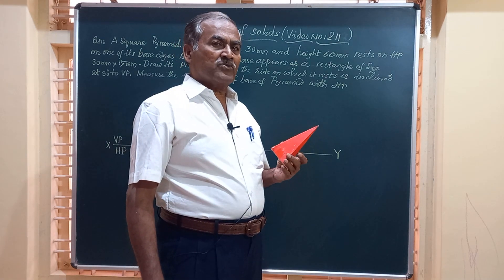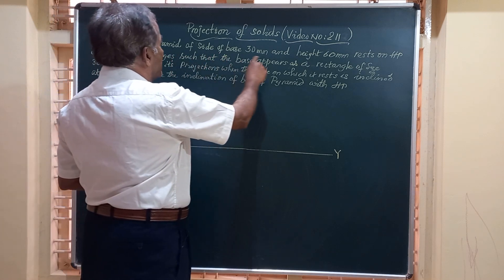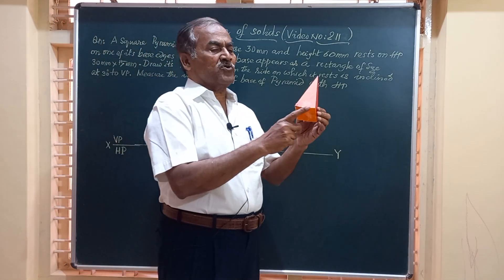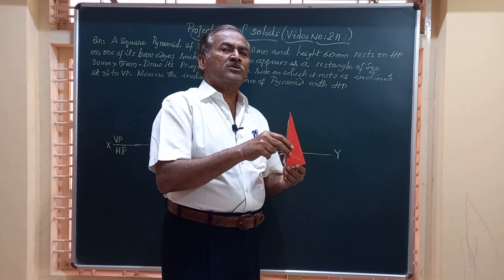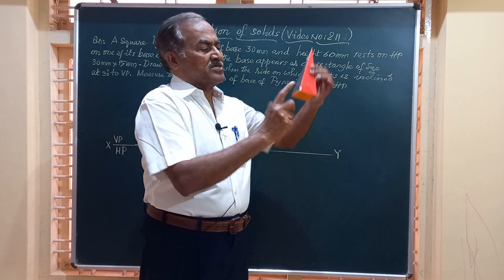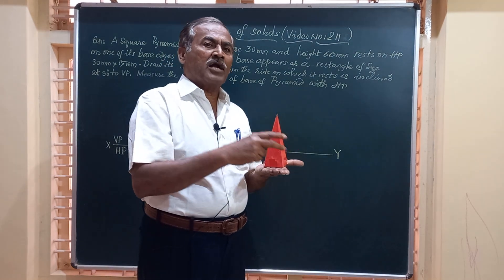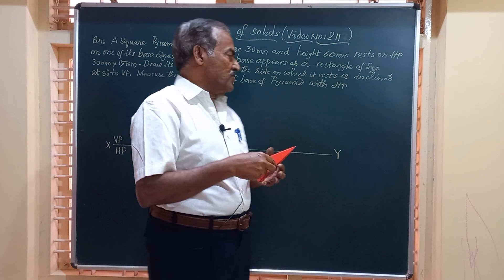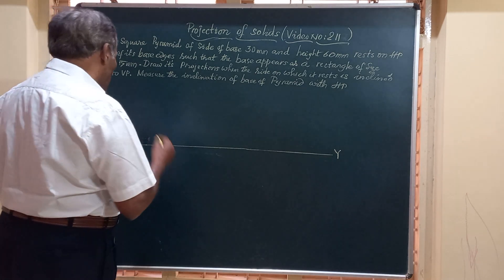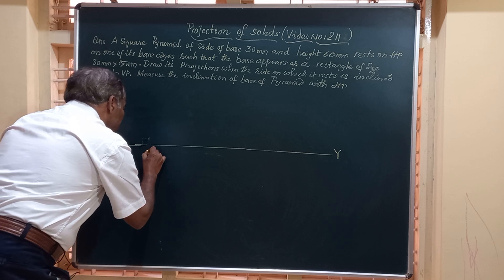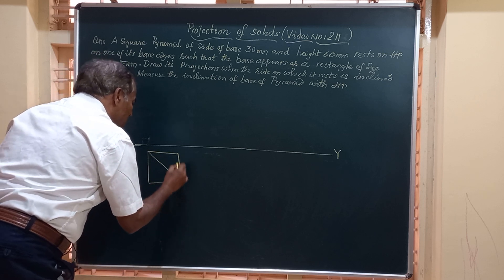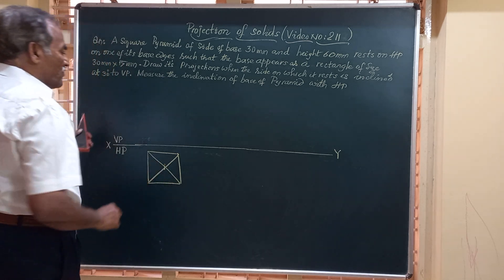For today's session, the question reads like this: a square pyramid of side of base 30 mm rests on HP on one of its base edges. It has four base edges and it has to rest on one of them, such that two of the base edges are perpendicular to VP. Obtain the top and front views of the pyramid. Draw the XY line — the line of intersection of VP and HP — and get the top view of the pyramid placed on its base on HP to start with.